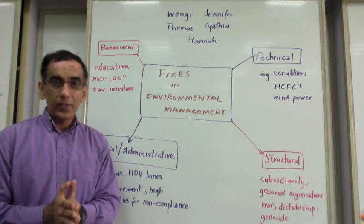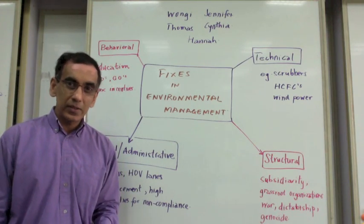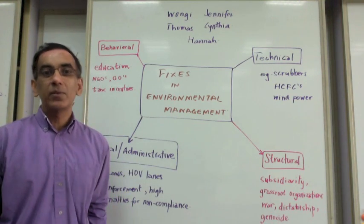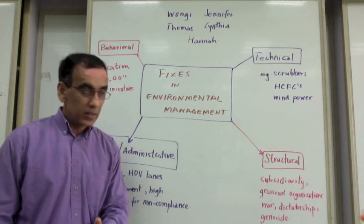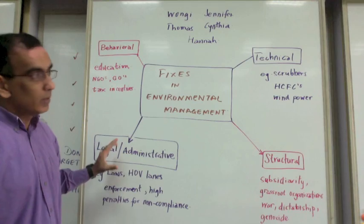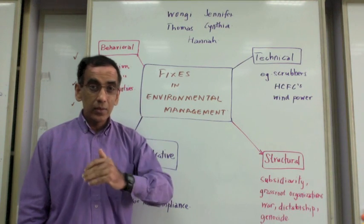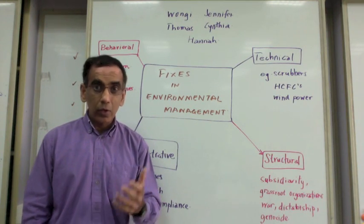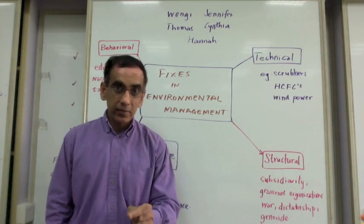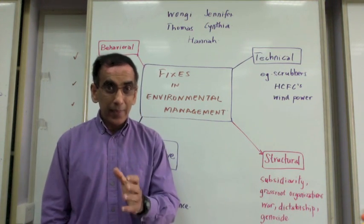Finally, I would like to focus on this central aspect of environmental management. In every ESS exam, students are bound to have to make suggestions for fixing environmental problems — this is one of the central themes in the course. The fixes in environmental management can be well conceptualized with this model. These include the technical fix, an example of which would be a scrubber used to remove pollutants emitted from a coal-fired power plant, or the use of hydrochlorofluorocarbons as an alternative to chlorofluorocarbons (CFCs), or the use of wind power as a way of managing carbon emissions.